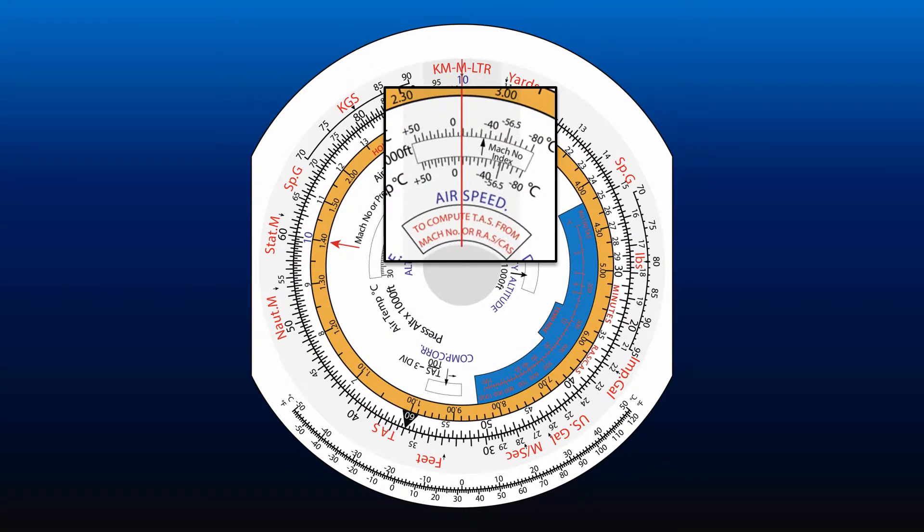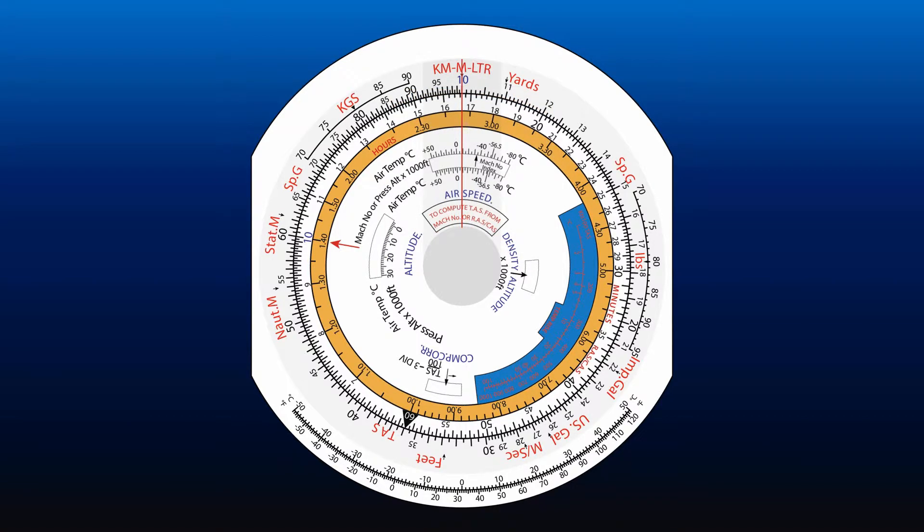In the airspeed window, align the Mach number index with outside air temperature. To obtain the true airspeed which corresponds to a given Mach number at that temperature, align the cursor with the Mach number on the inner scale. Then read off the true airspeed which corresponds to that Mach number on the outer scale.